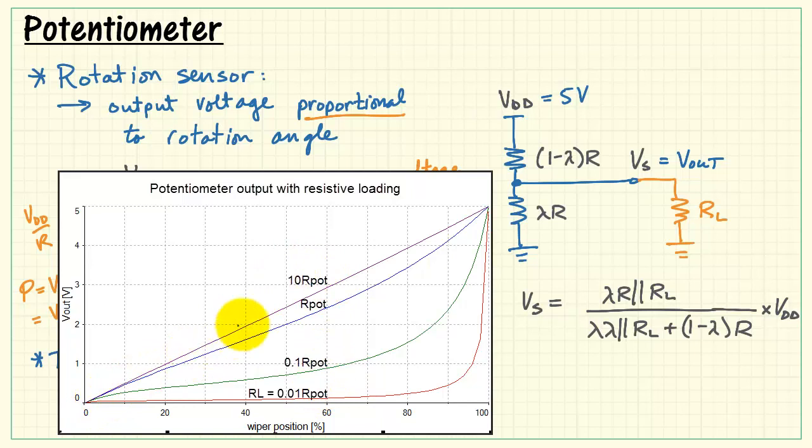When the load resistance is 10 times higher than the potentiometer value, the output is almost completely linear. That's a much more desirable situation if we're looking for output voltage proportional to rotation angle. That means to avoid a non-linear output, we need to ensure that the load resistance approaches the ideal case of looking like an open circuit.